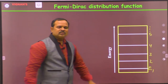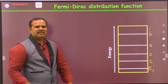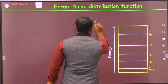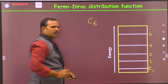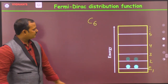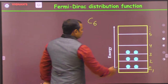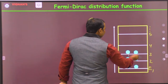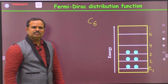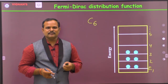Now, if we have 6 electrons — for example, the carbon atom — these electrons are distributed across the energy levels. This follows Pauli's exclusion principle, which we have seen in the last class.